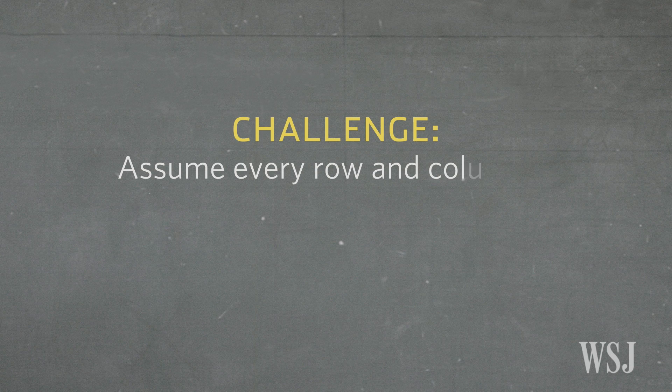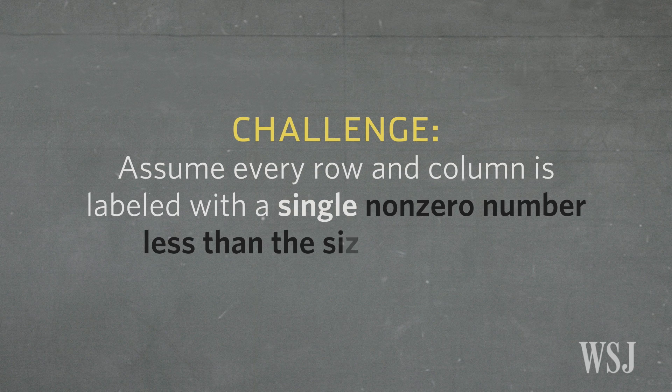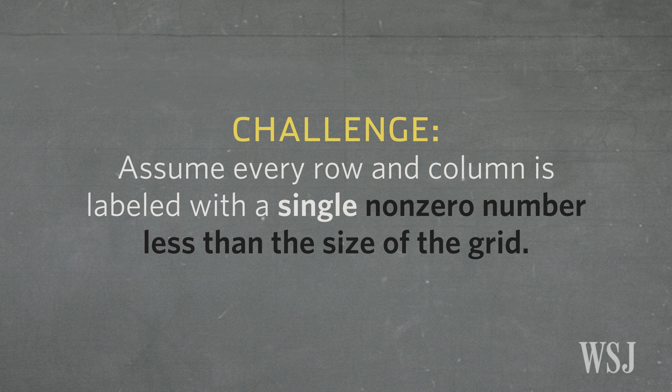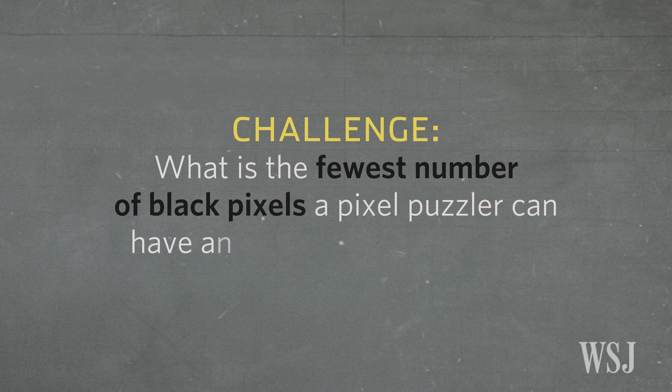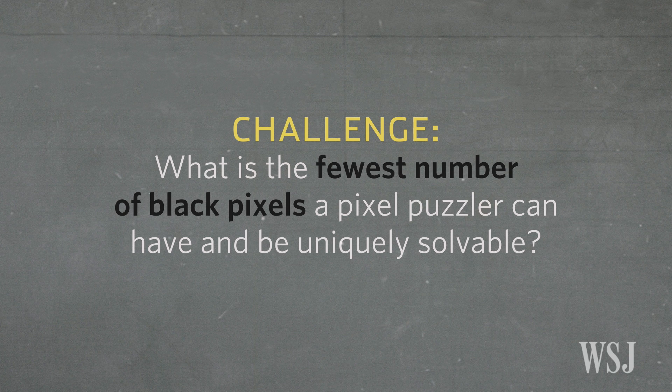Now assume that every row and column is labeled with a single non-zero number less than the size of the grid. What is the fewest number of black pixels a pixel puzzler can have and be uniquely solvable?